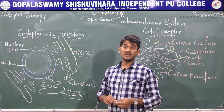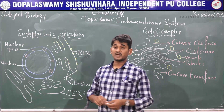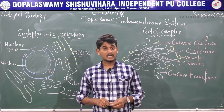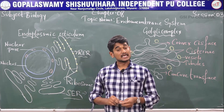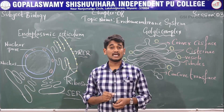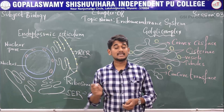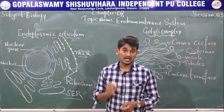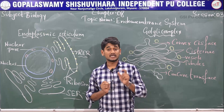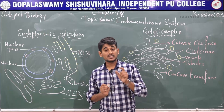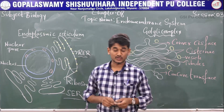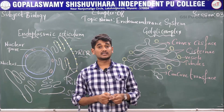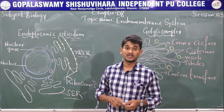The endomembrane system includes endoplasmic reticulum, Golgi complex, lysosomes, and vacuoles. Each of the membrane organelles is distinct in terms of its structure and function, and many of these together are considered as the endomembrane system.